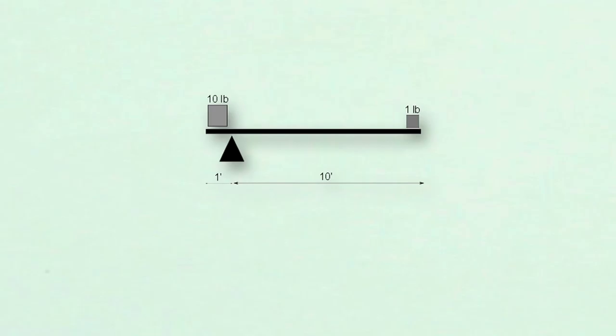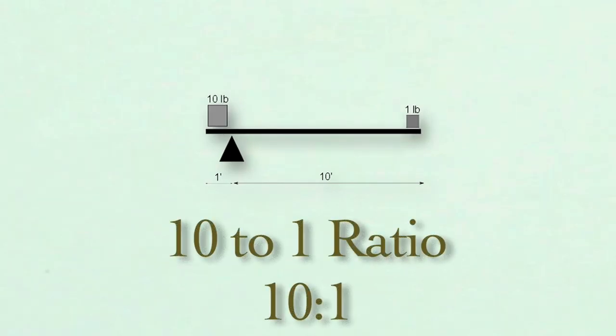Now if we move the weight on the left towards the pivot point, the situation changes. If a 10 pound weight is one foot from the fulcrum on the left side, it will only take one pound to balance it 10 feet from the fulcrum on the right side. This is a 10 to 1 ratio.